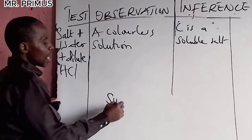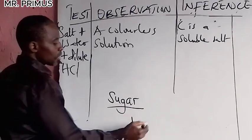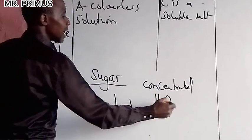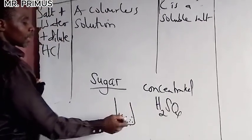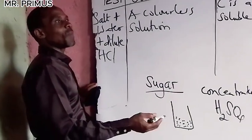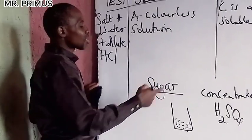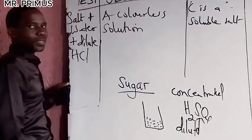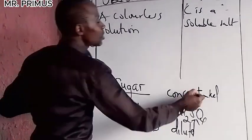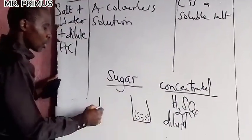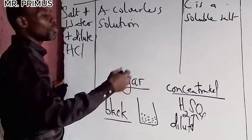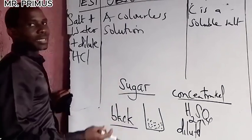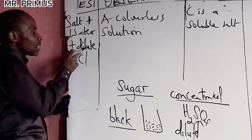Let me give you an instance. In an experiment, students were asked to add concentrated H2SO4 to sugar in a beaker. When I came back, I did not see the expected result — they had used dilute H2SO4 instead of concentrated. If they had used concentrated H2SO4, the sugar would have turned black. So you must be careful when instructed to use concentrated acid or alkali.